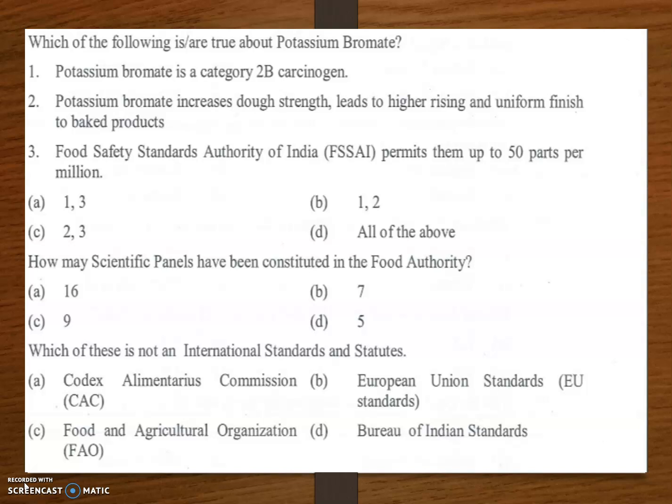Which of these is not an international standard or statute? The answer is option D — Bureau of Indian Standards. It is a national organization. The rest — Codex Alimentarius, FAO, and the European Union standards — are all international standards and statutes.